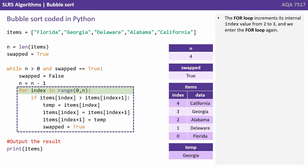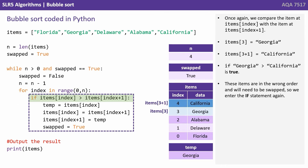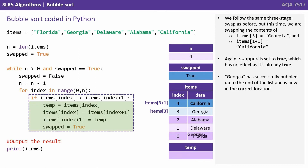The for loop increments from 2 to 3 and we enter the for loop again. We're comparing items[index] with items[index+1], so that's Georgia with California. Georgia is greater than California — that's true — the items are in the wrong order, so they need to be swapped. We enter the if statement again, follow the same three-stage swap, swapping Georgia with California. Swap is set to true, which has no effect as it's already true. Georgia has successfully bubbled up to the end of the list and is now in the correct location.